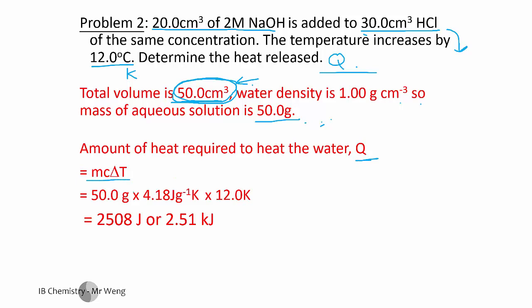There's the formula there, Q equals mcΔT. We've already ticked off the 50. Your data booklet has the 4.18 and it's 12. So times those out and you get 2.51 kilojoules.